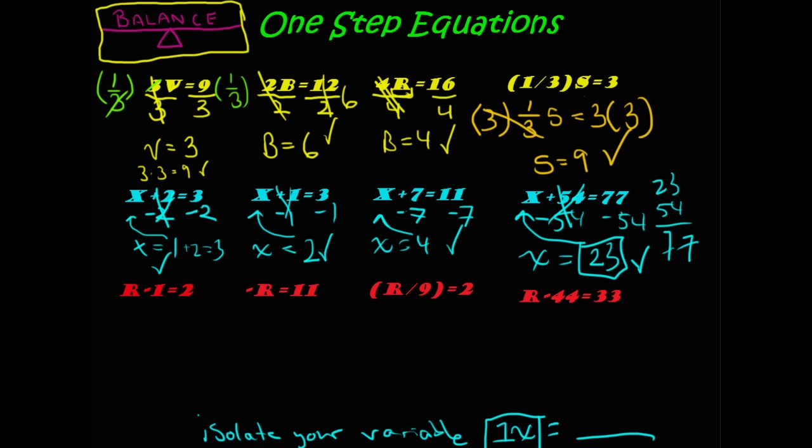For this last row, you have to, once again, isolate the variable. And some negatives were thrown in here just so you see them. So for the first one, if I want to get r isolated on the left hand of the equation, I need to add 1 to each side so that it cancels out this one. And 2 plus 1 is 3. So r equals 3. Well, 3 minus 1 is 2. 2 equals 2? Well, yes it does.